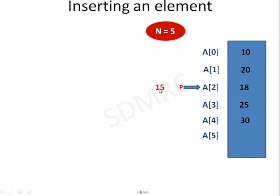As I need to insert this value, I need to shift these three values downwards. So a[4] will be shifted to a[5], a[3] will be shifted to a[4], and a[2] needs to be shifted to a[3].